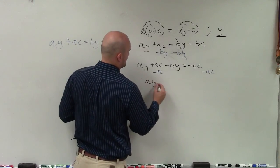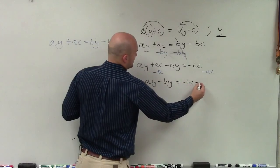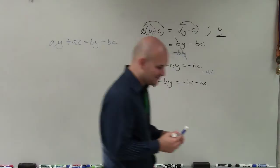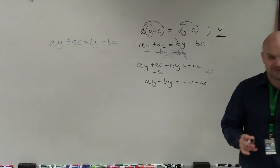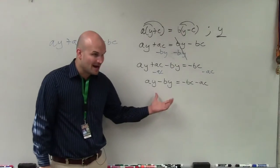So therefore, I have ay minus by equals negative bc minus ac. Now, this is why I kind of picked a difficult problem to start off with, which I'll be more than happy to go over an easier one with you.